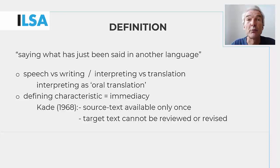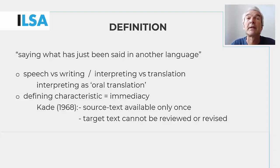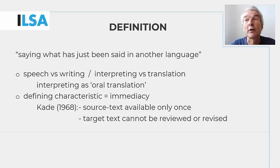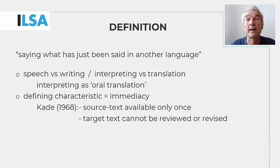As posited in the definition proposed by Otto Kade in the 1960s, the source text in interpreting is available for processing only once. And likewise, the interpreter's output cannot be reviewed or revised afterwards. In other words, interpreting means producing a first and final rendering of a source message, with little or no opportunity for correction. Whether the source and/or target texts are spoken, written, or signed is not the defining criteria.